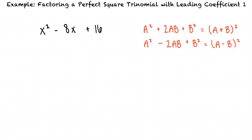We can see that our given trinomial corresponds to the second formula because the second term is negative. This tells us that we can use formula 2 to factor the given perfect square trinomial.